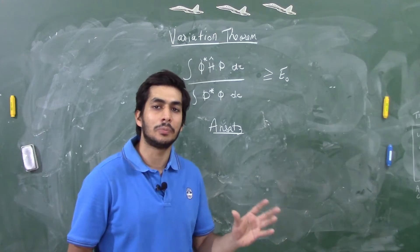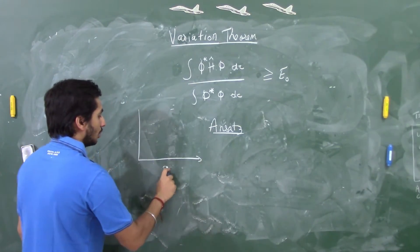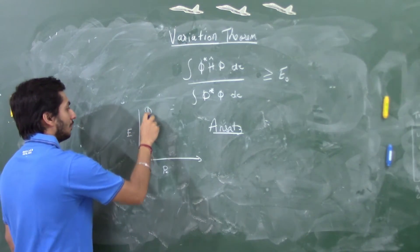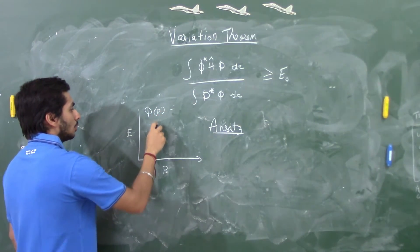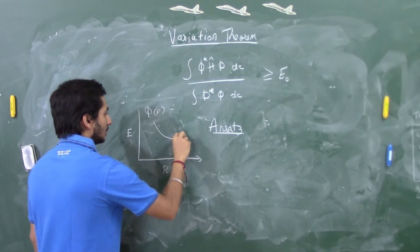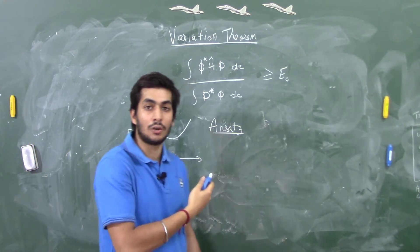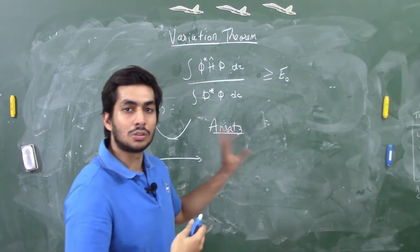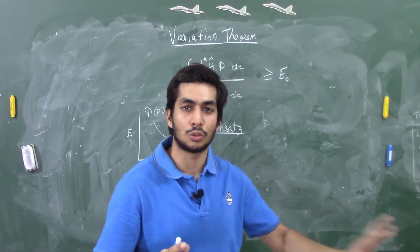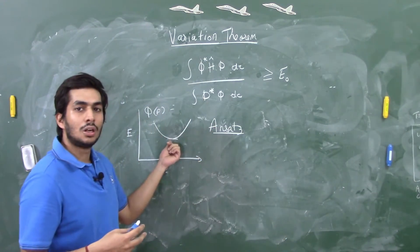You make a guess about a trial wave function that depends on certain parameters, and you vary these parameters to find the minimum energy. Let's say on a graph the x-axis is the parameter and the y-axis is the energy. We vary the parameter using this trial wave function, and wherever we get the minima, we say that's the closest energy we've reached to the original energy of the system.